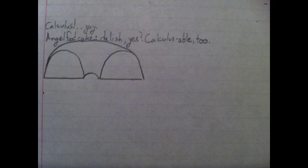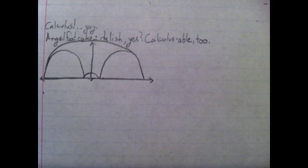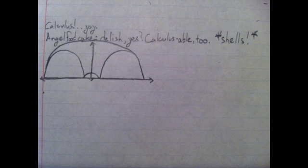The shape of angel food cake can be seen as a solid of rotation around the y axis. We can divide it up into cylindrical shells that we integrate to find the volume.